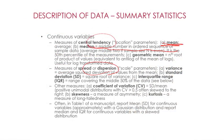The median is defined as the 50th percentile of the measurements. We can also use the geometric mean, which is the nth root of the product of values, equivalent to the anti-log of the mean of logs. This is useful for log-transformed data — if we have skewed data and want to transform it to better normality, we typically use a log transformation, and the geometric mean is appropriate in that context.